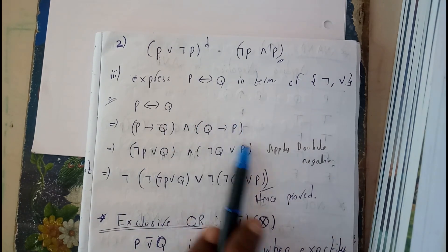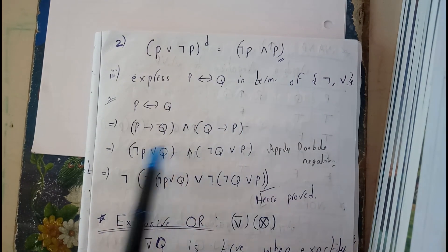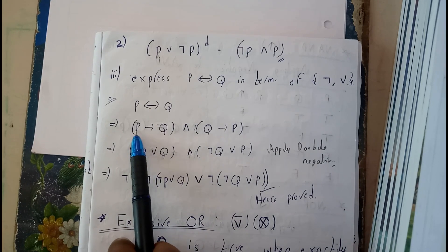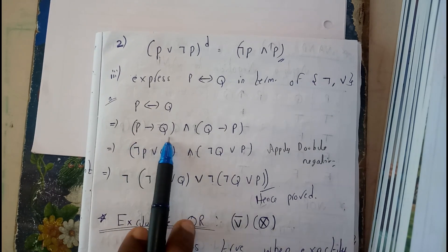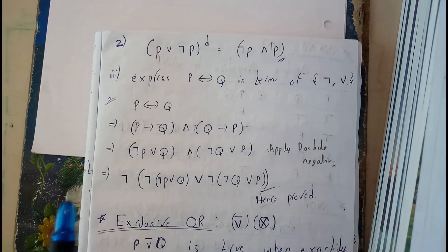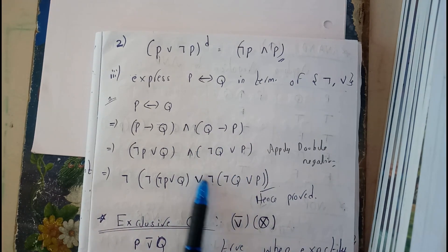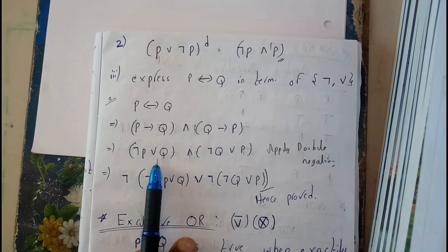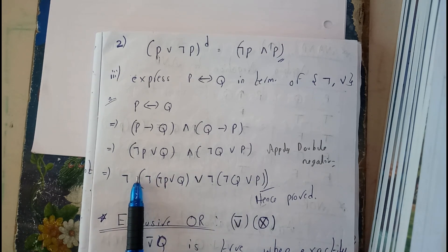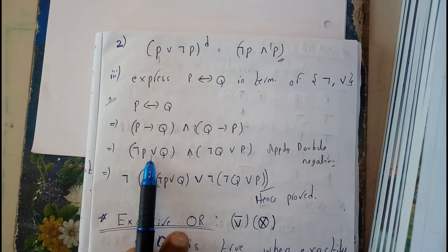P implies Q equals negation of P OR Q. Again, Q implies P is negation of Q OR P. Just applying double negation. By applying double negation, we'll be getting the same result. I applied negation here initially, and double negation means applying negation twice.